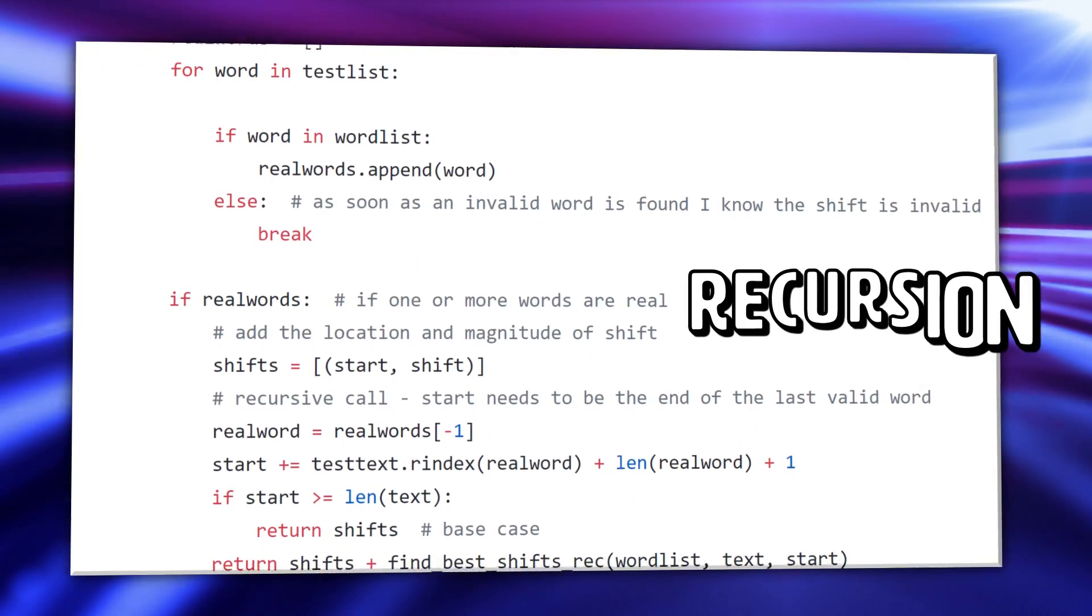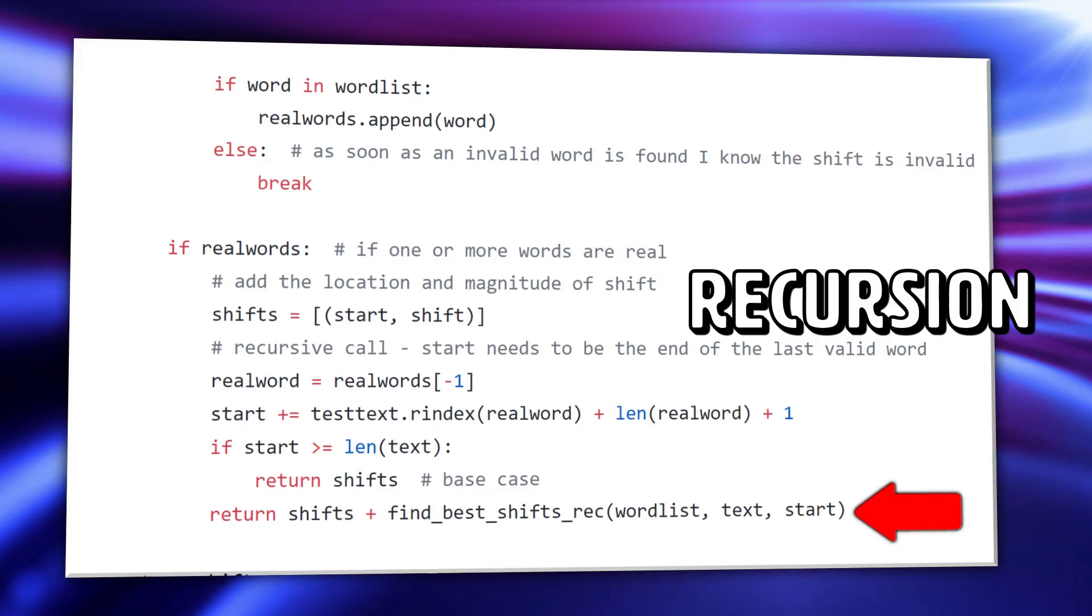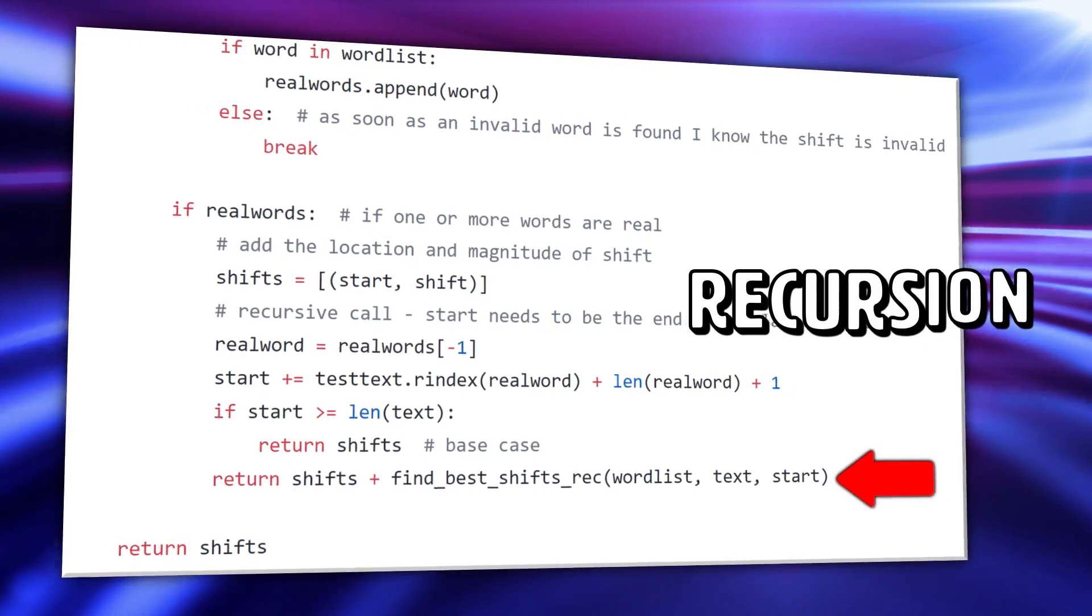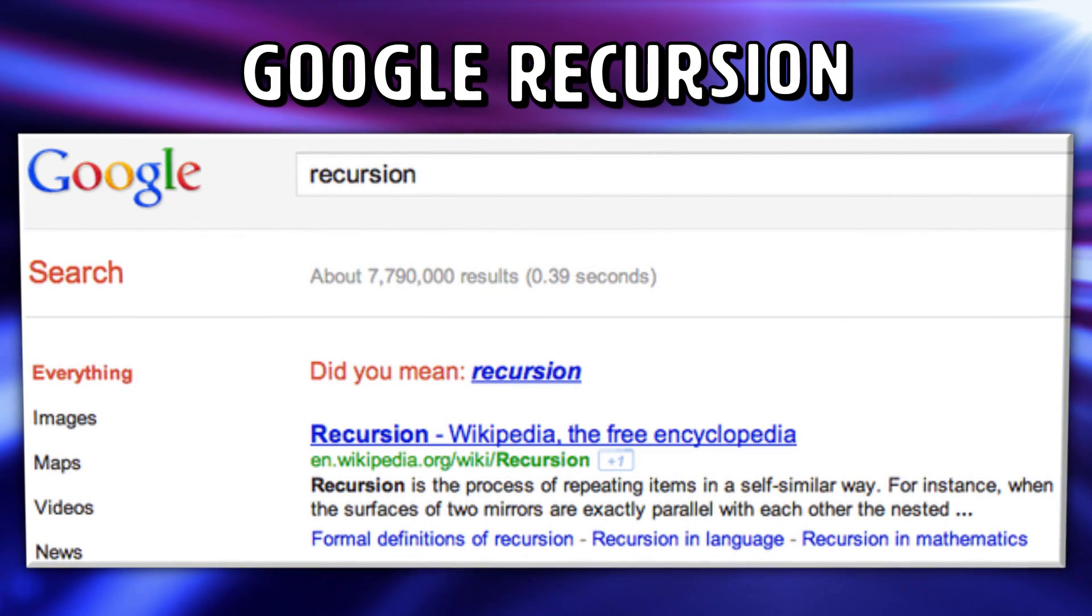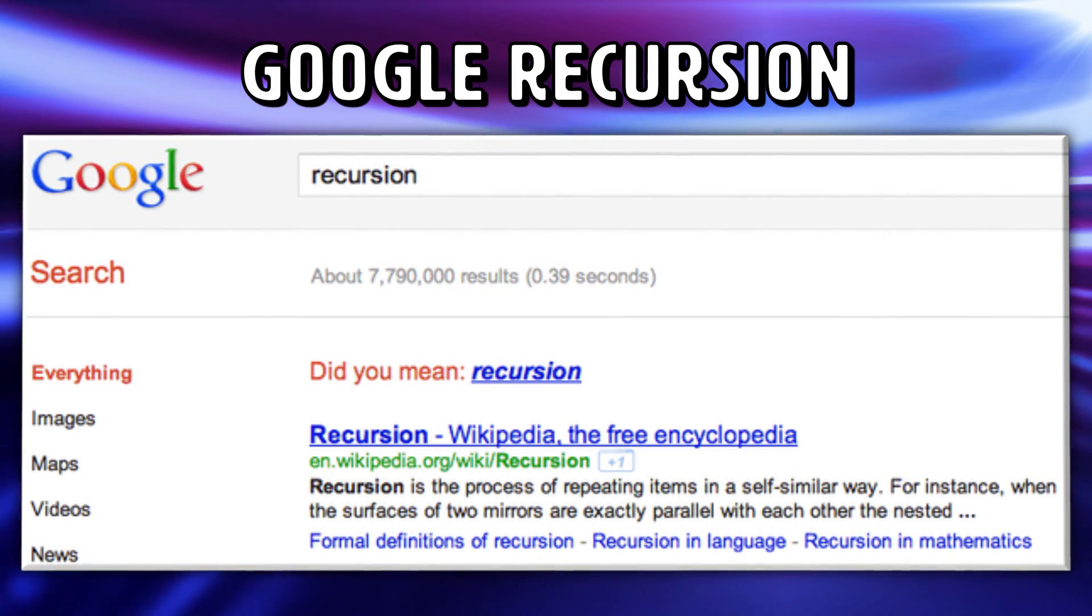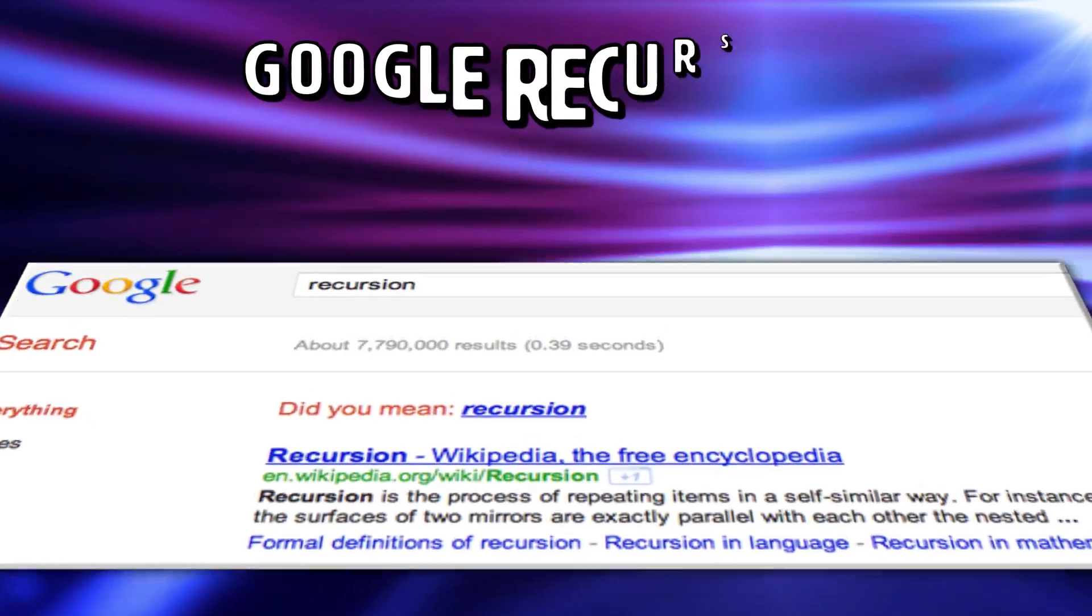Recursion, a part of discrete math, is a way to solve a problem where the solution depends on solutions to smaller instances of the same problem. If we Google search the word recursion, it recursively asks, did you mean recursion? Which is a fun little Easter egg from the programmers at Google. In fact, the internet is riddled with these.